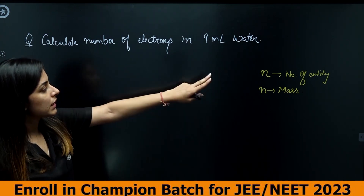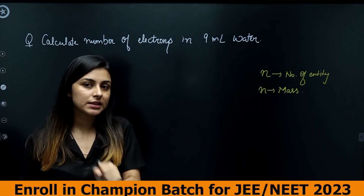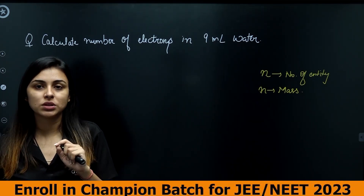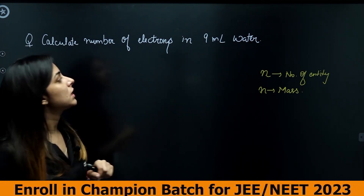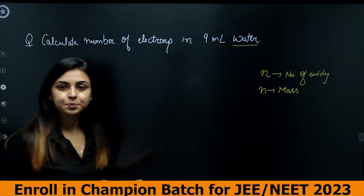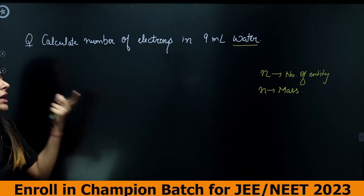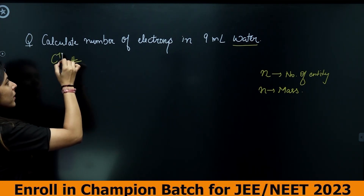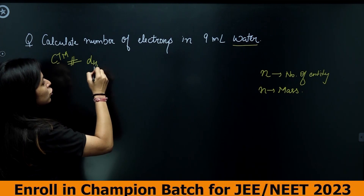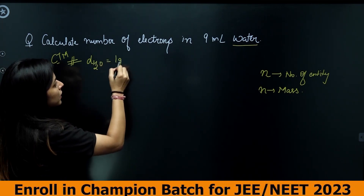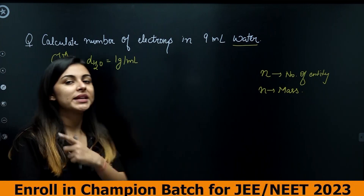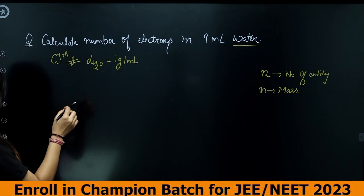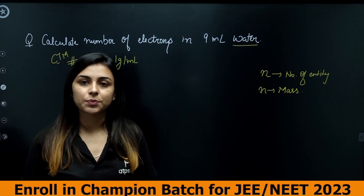To solve this, we need to convert volume to mass first, then find moles. Keep this committed to memory: the density of water is 1 gram per milliliter. This will not usually be given in the question, so you must remember it.